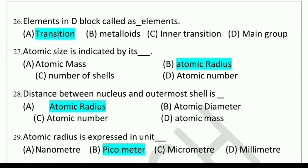Next question: Elements in D block are called as dash elements. Options: transition, metalloids, inner transition, or main group. They are called transition elements. Next question: Atomic size is indicated by its dash. Options: atomic mass, atomic radius, number of shells, or atomic number. The correct answer is atomic radius.